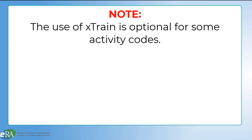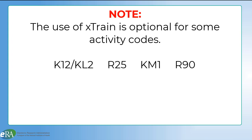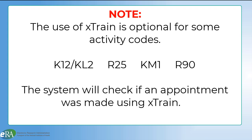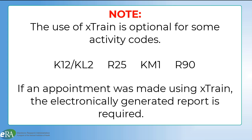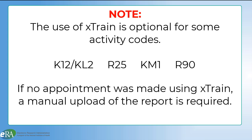You should note that for some activity codes, the use of Xtrain is optional. So for K12, KL2, R25, KM1, and R90 activity codes, the ERA system will check if the appointment has been made in Xtrain. If an appointment was made using Xtrain, NIH will require an electronically generated report. If no appointment was made, the system will not be able to generate a report, and a manual upload of the Diversity Report will be required.